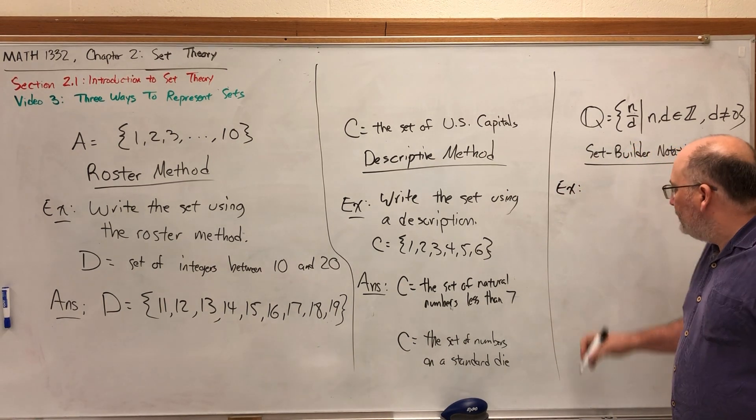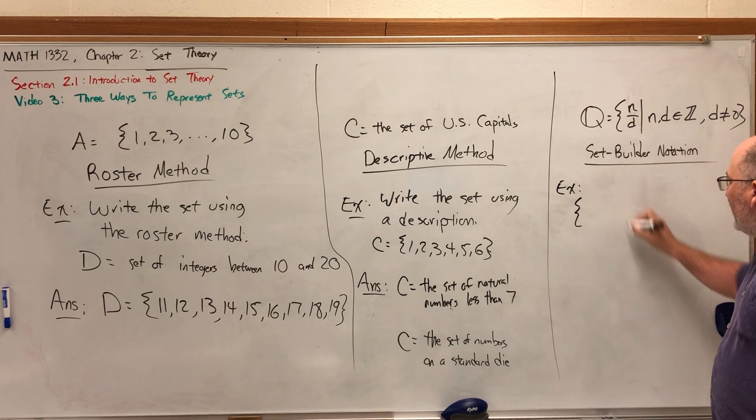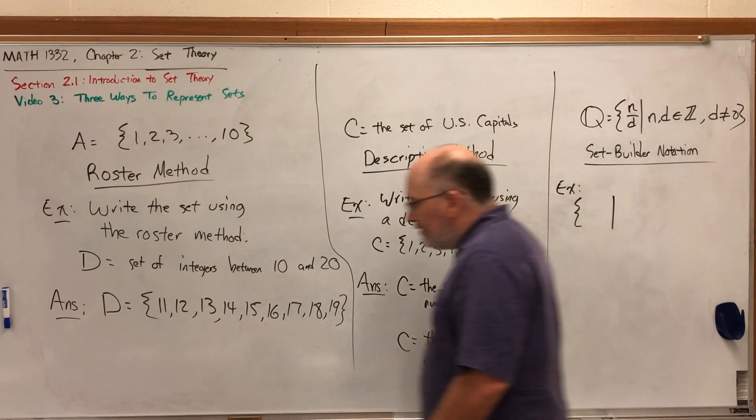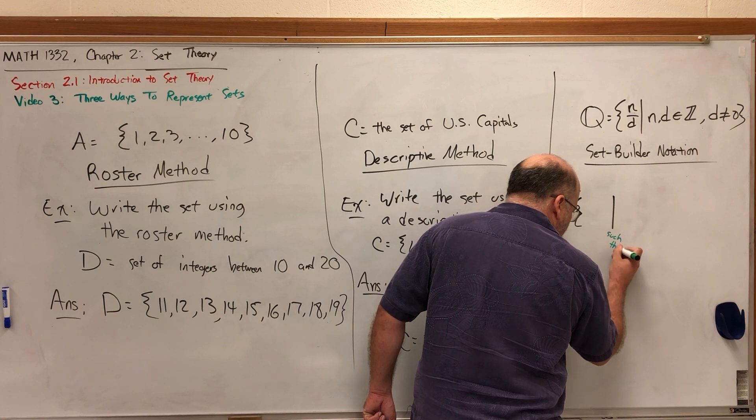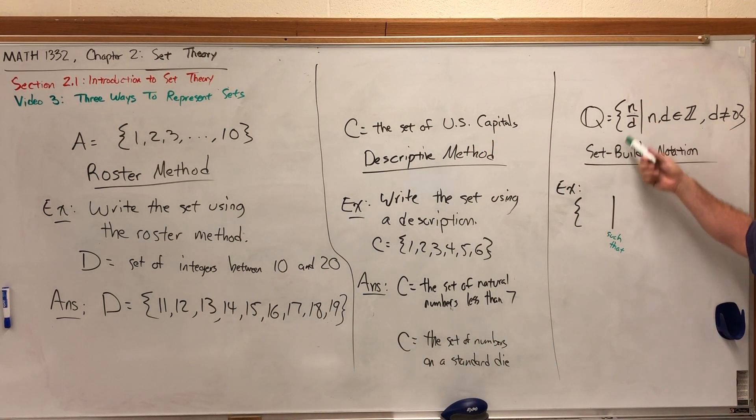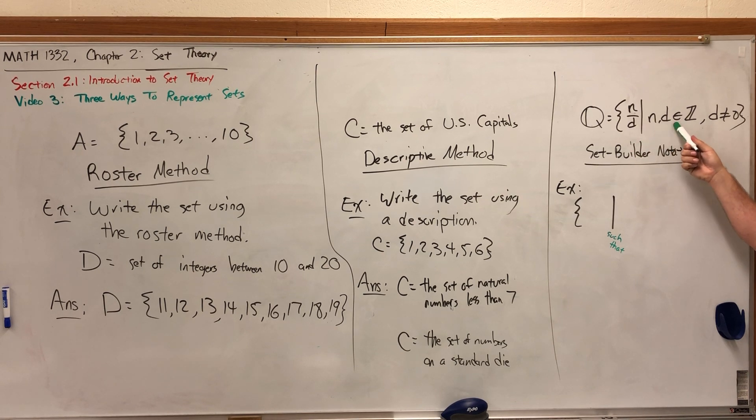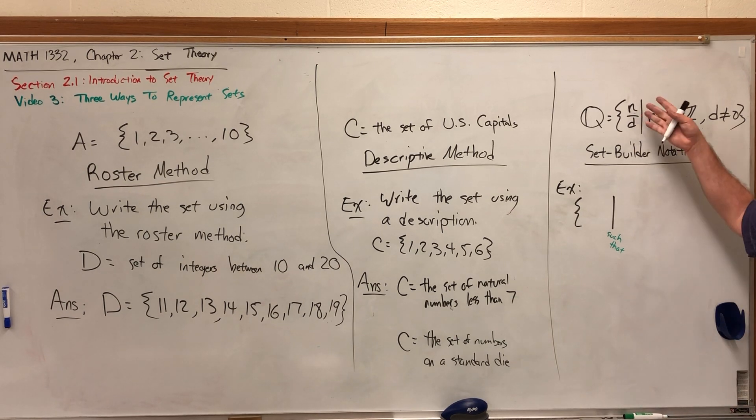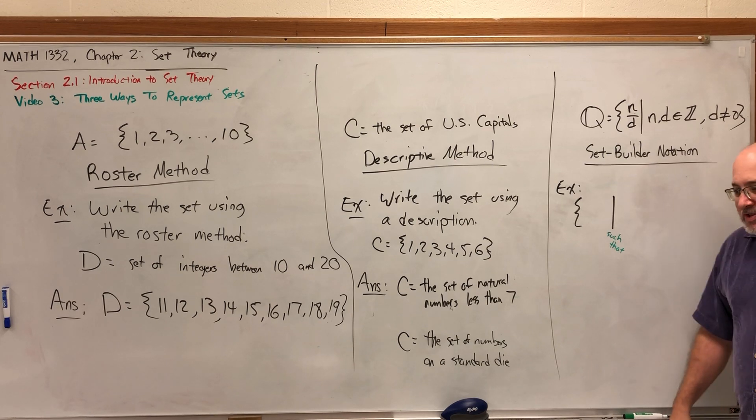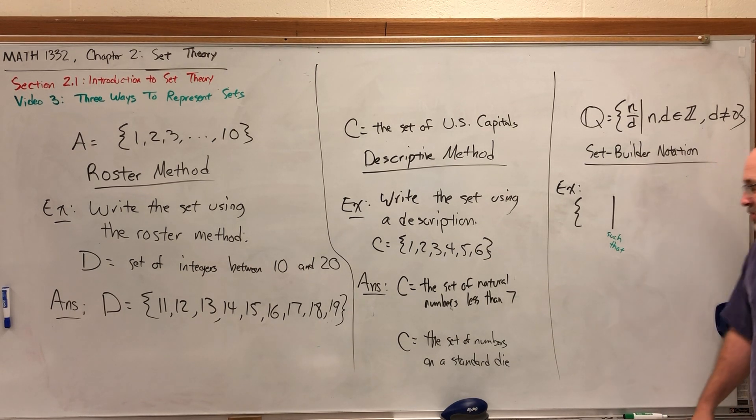When you see a sentence in set builder notation, and I'm just going to write one out, you can usually spot it because you'll see this vertical line. This vertical line translates to the phrase 'such that.' Up here is the set of fractions such that the numerator and denominator are integers and the denominator is not equal to zero. What precedes the such that is usually something generic. When we set up the set builder notation for the rational numbers, we needed something that was generic but at the same time specific enough to say that I'm a ratio of integers. But in the absence of something specific like I'm a ratio of integers, you can just write something super generic to the left of the such that bar.